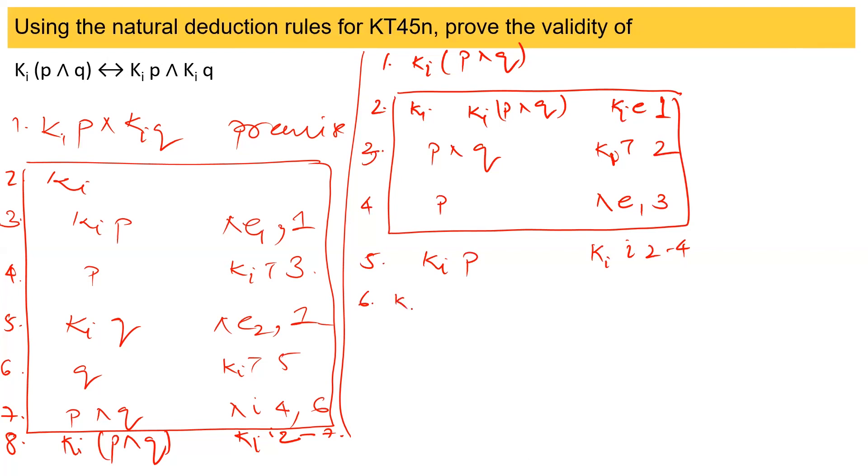Now again taking another K2 which is arbitrary, I get K2 P and Q. KI elimination rule of one. Now we'll get P and Q. This is the KI T rule from six. Then I get Q. This is the AND elimination rule of two from seven.